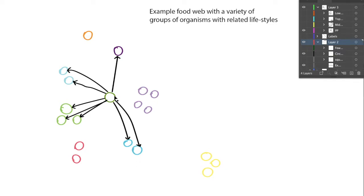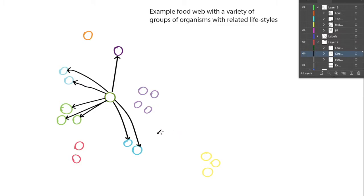Obviously if something happens to this primary producer — say it goes extinct — the whole ecosystem will go extinct because these organisms don't have anything to eat. So this would be an ecosystem that depends on one population of organisms specifically.